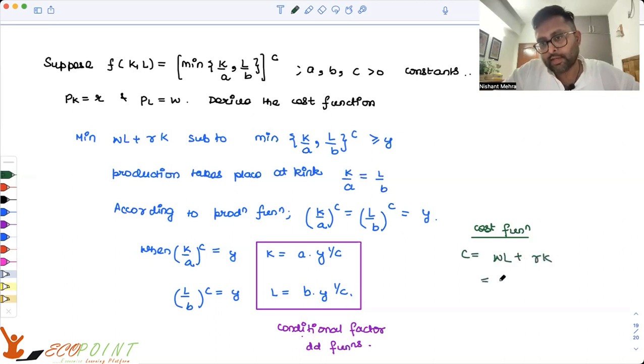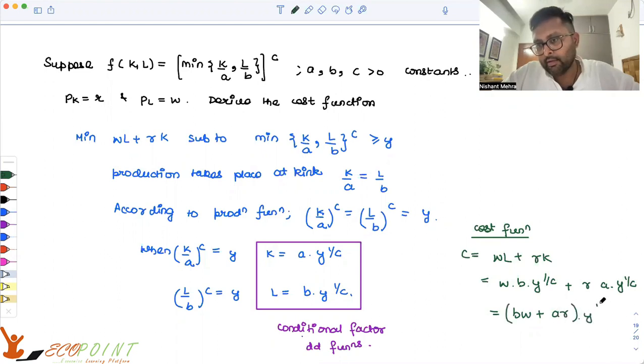It is wl plus rk. What is l equals to? b into y to the power 1 by c. What is k equals to? a into y to the power 1 by c. So you guys can write this as bw plus ar, y to the power of 1 by c. This is what my cost function is.